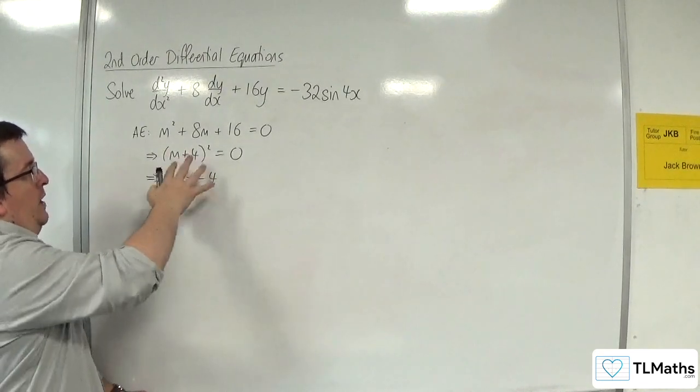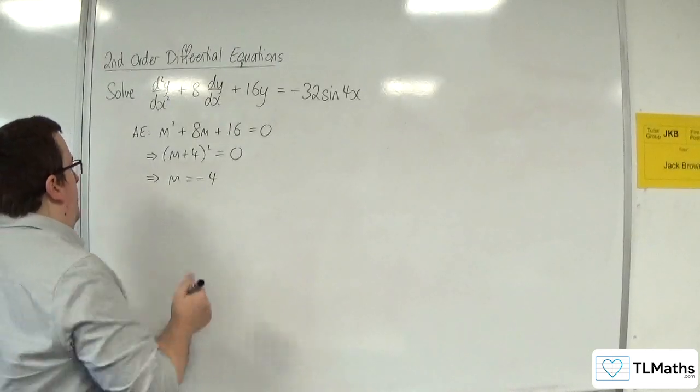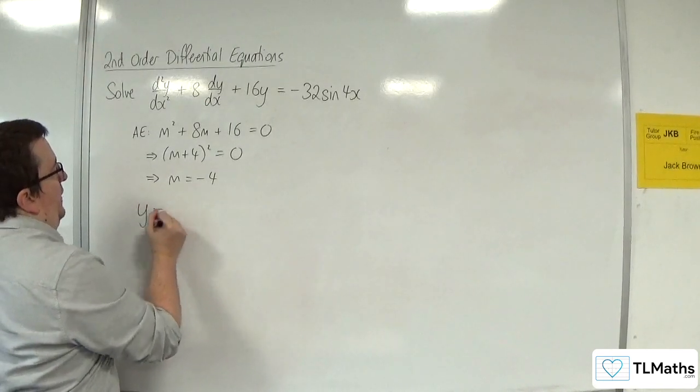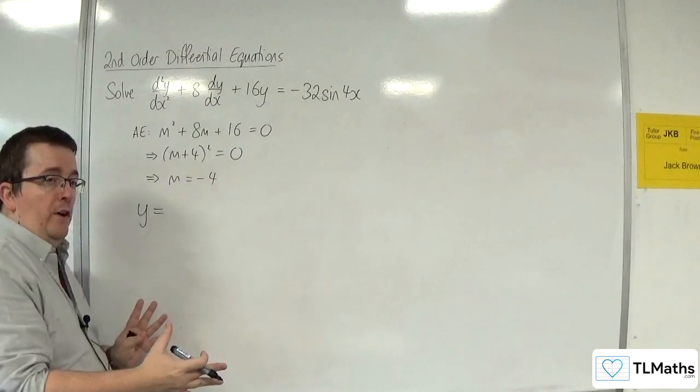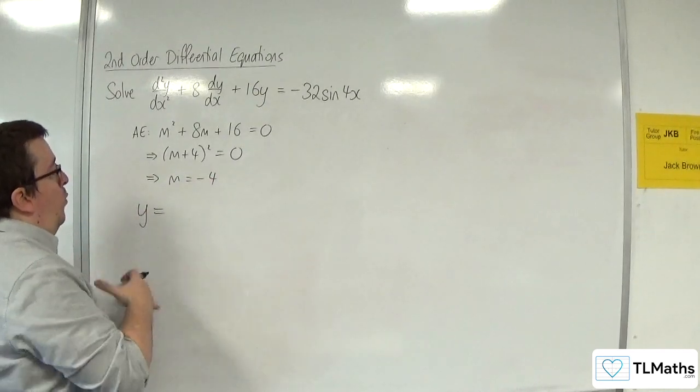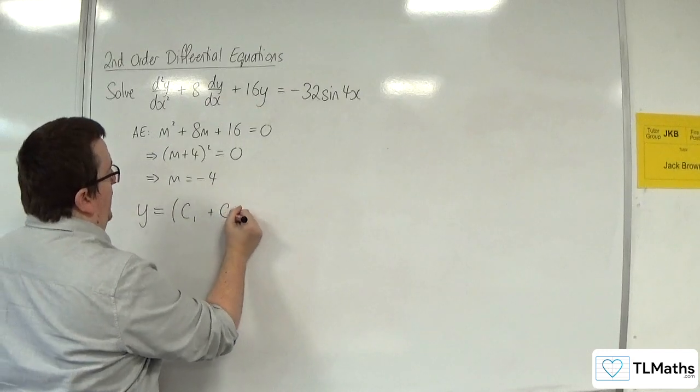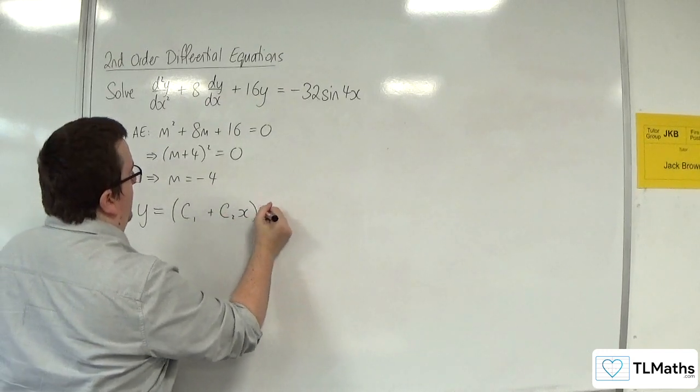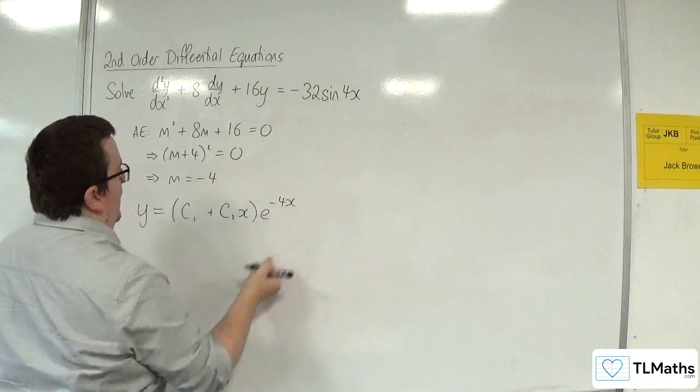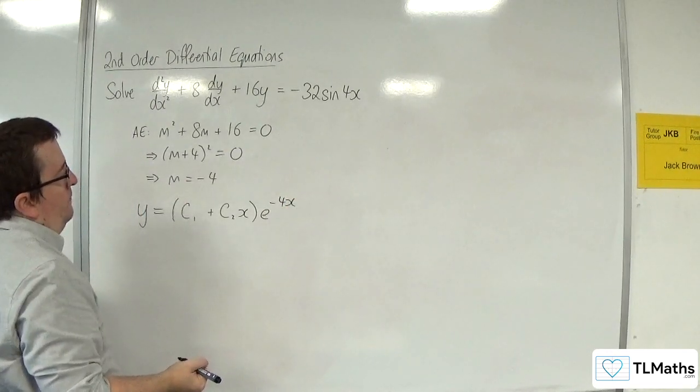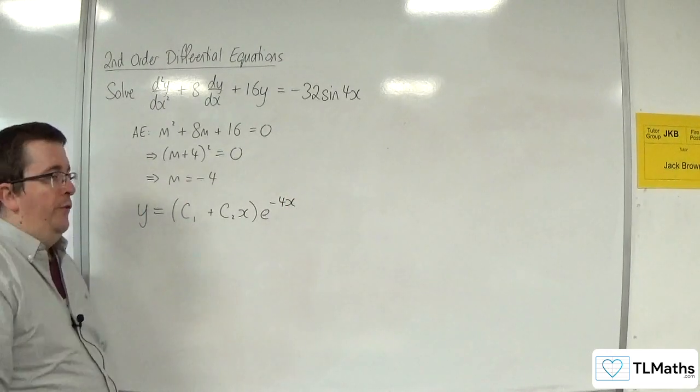Now because we've got the repeated root here, that means the complementary function would be y = (c₁ + c₂x)e^(-4x). So that's our complementary function.